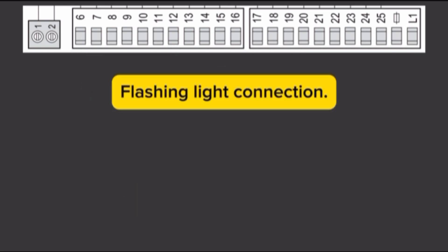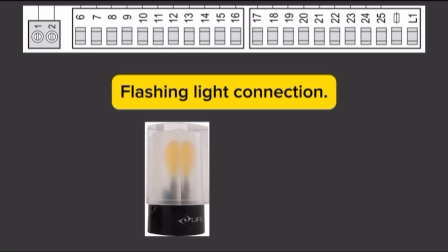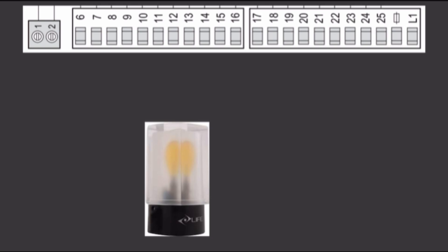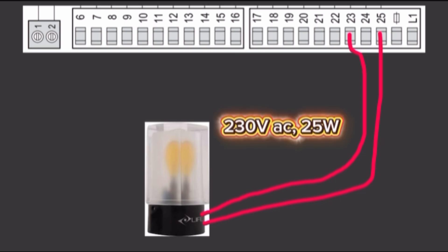Flashing light connection. Connect direct terminal 23 and terminal 25 by wire to flash pin block. Terminal 23 and terminal 25 is output 230 volt AC 25 watts max.